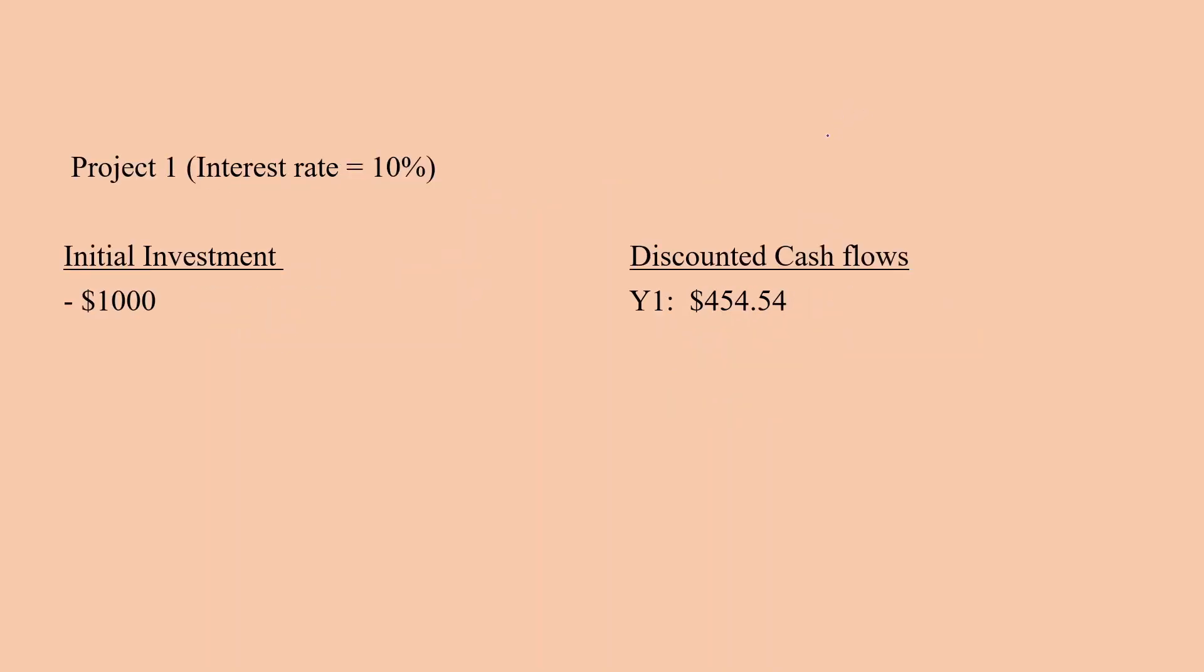We already know the present value of an investment formula which is PV equals CT divided by 1 plus R raised to the power T, where T is the number of periods, C is the cash flow in that particular period, and R is the interest rate.